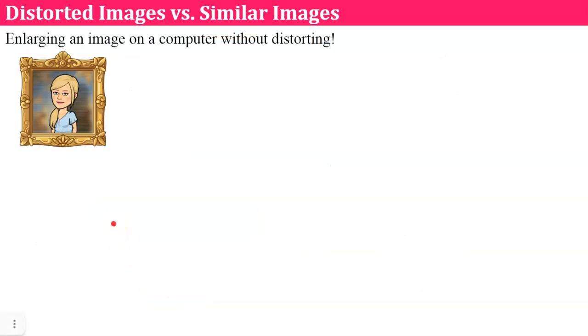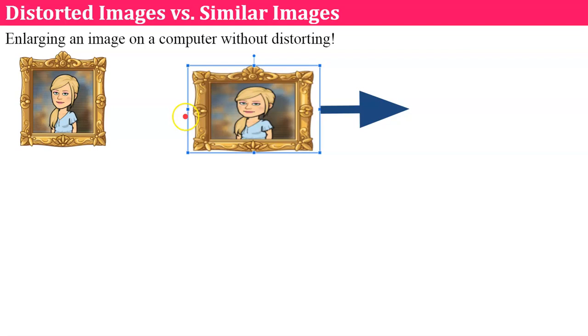Let's talk about a distorted image versus a similar image. I'm hoping that you've all seen an image on a computer and when you click on it, it brings up the little dots around it that you can make it bigger or smaller. This is the same image but when I clicked on it, I took this point and I dragged it to the right to make it bigger. I didn't increase it proportionally because I only increased the width. These are not similar figures.